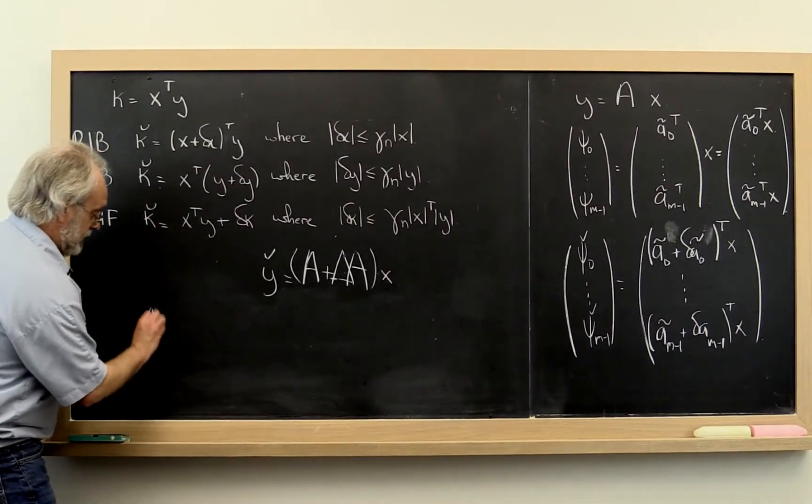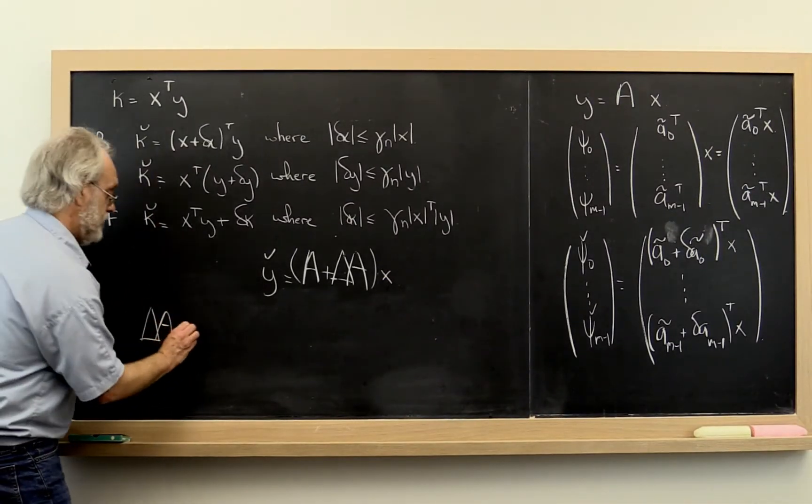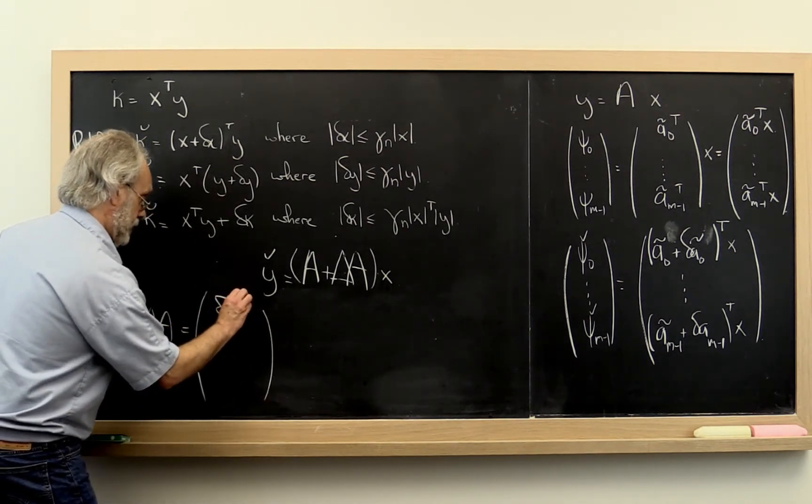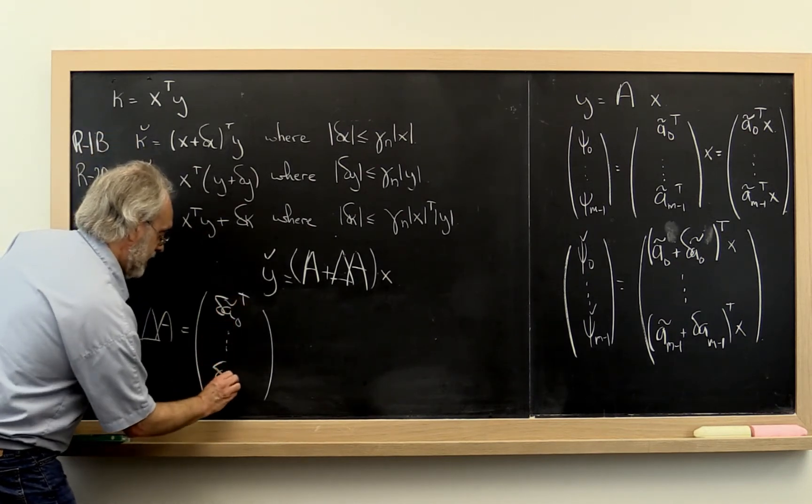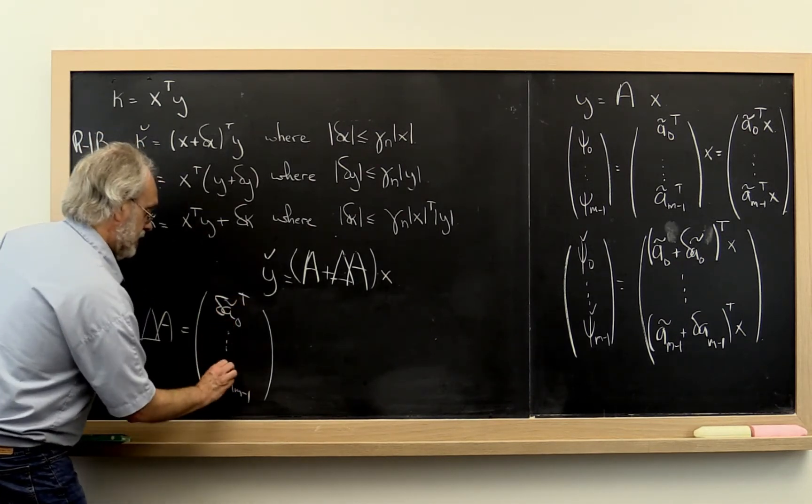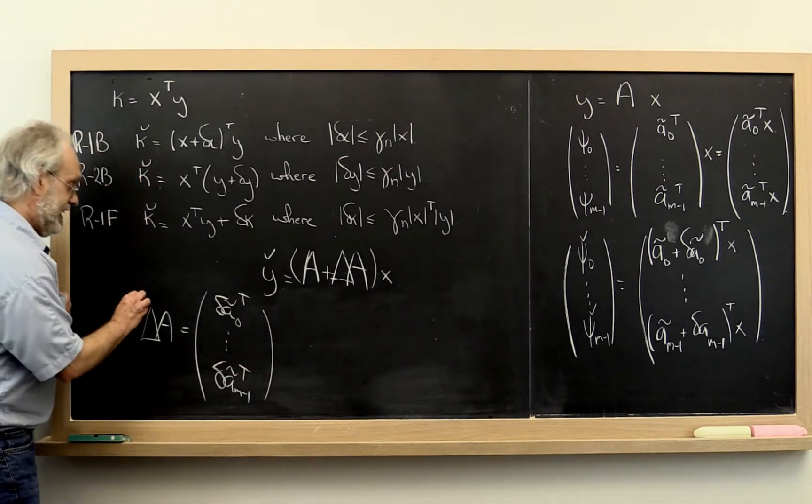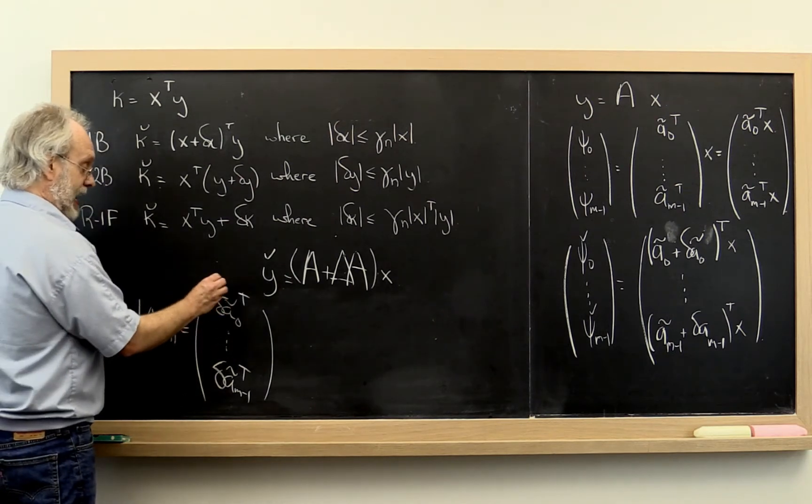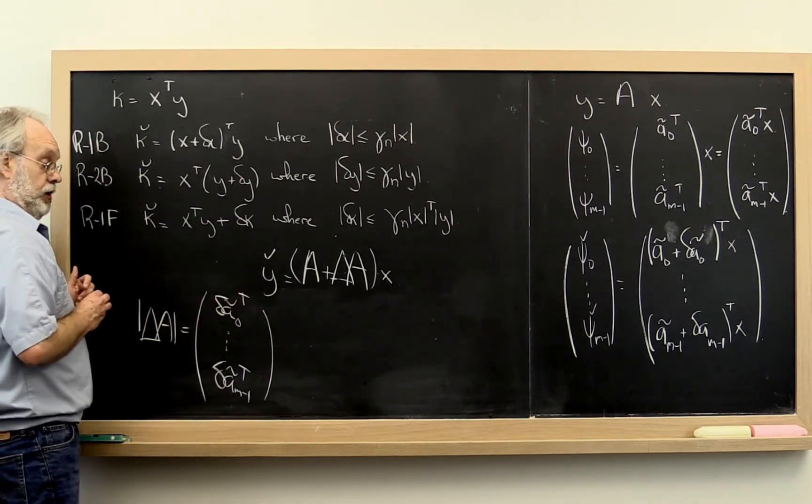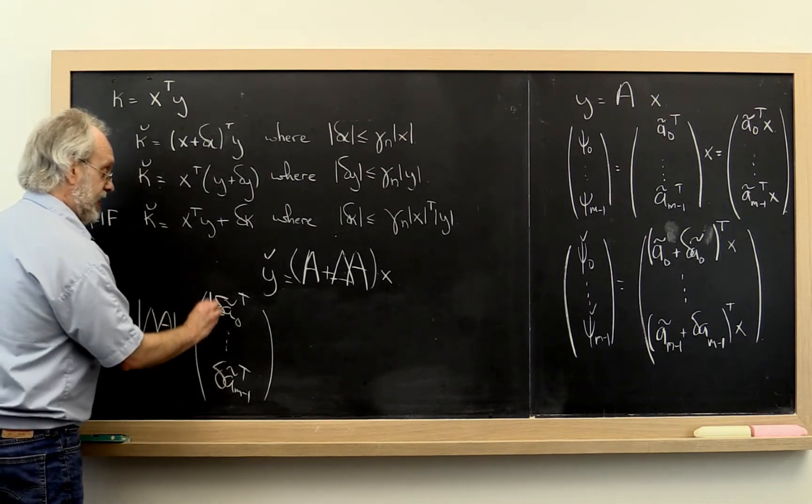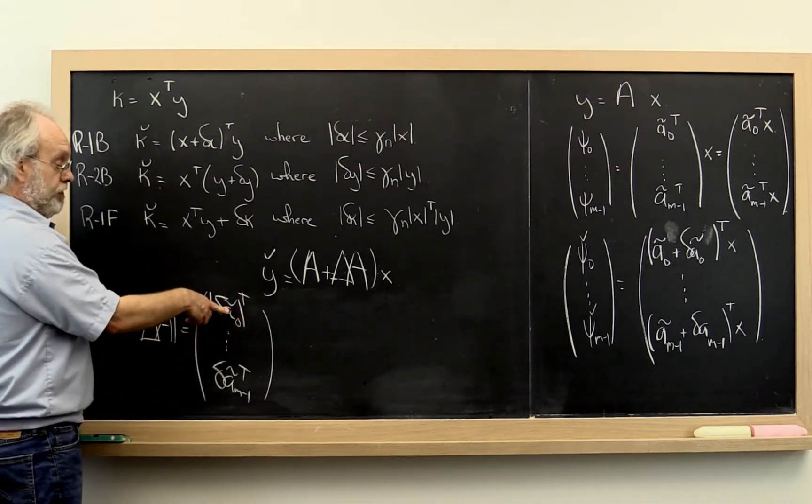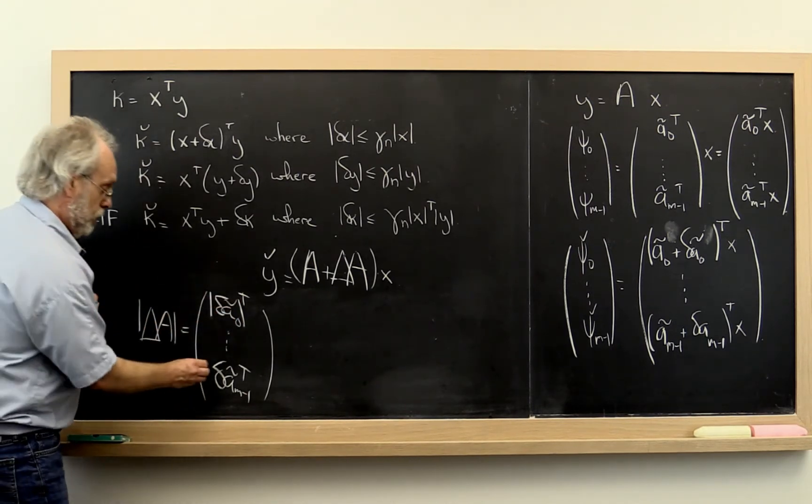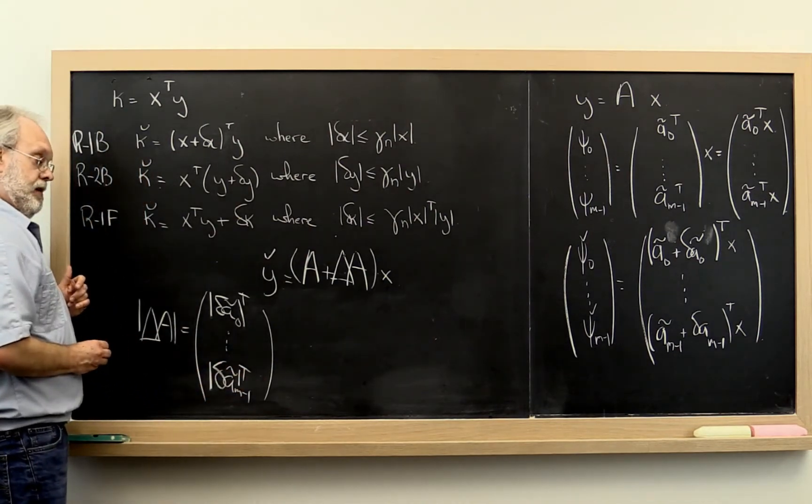If we now look at our matrix delta A, that's just the matrix of the row vectors delta A zero tilde transpose through delta A M minus 1 tilde transpose. And if we take the element-wise absolute value of that, that's the same as the element-wise absolute value of each of the rows. But you can also think of that as the absolute value of the column vector that became that row and then transposed.